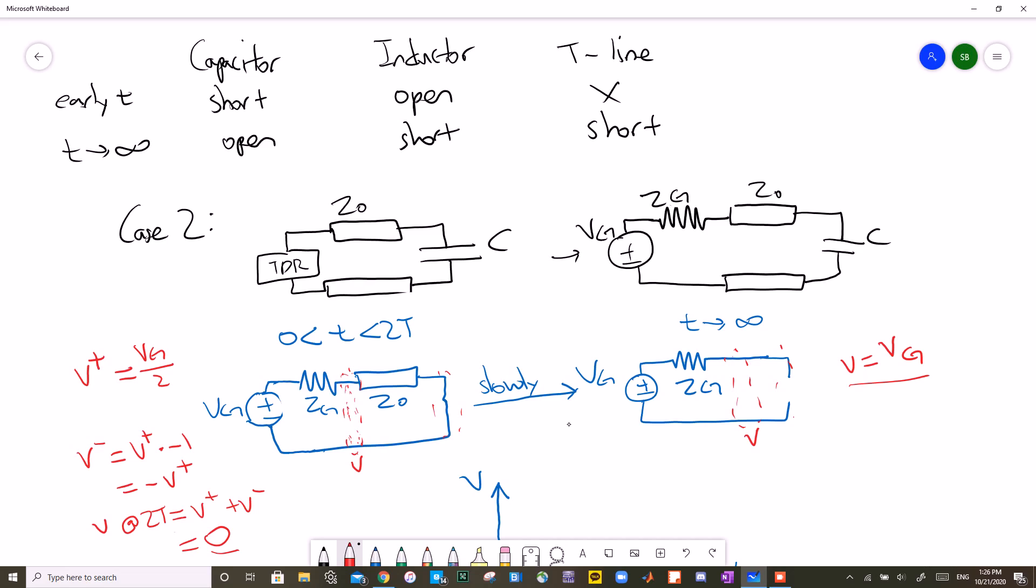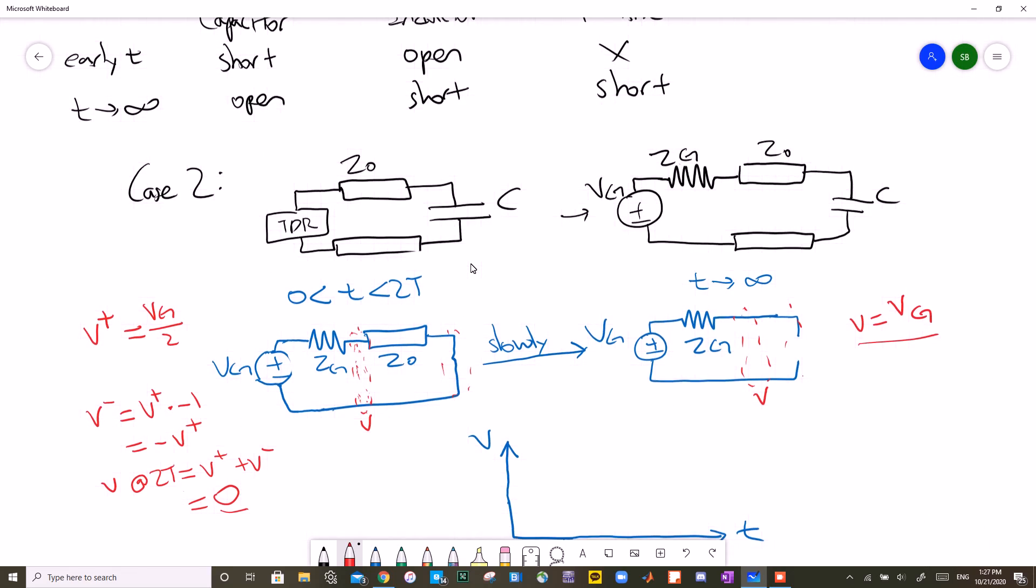However, as time goes on, it'll slowly turn into an open circuit, making this new circuit that we see on the right side. So when time goes from 0 to 2T, what is our V plus? Our V plus is still VG over 2 because ZG and Z0 are still the same. The reflection coefficient at a short circuit is negative 1, therefore making V minus equal to negative V plus. Adding those two for the final value is 0.